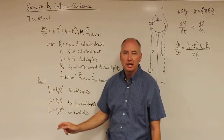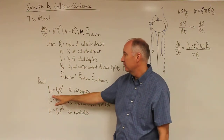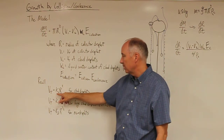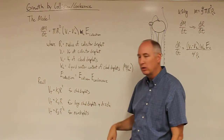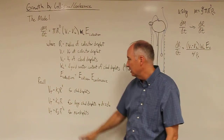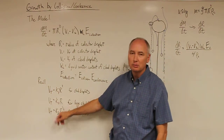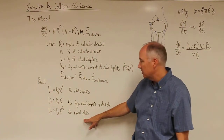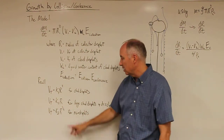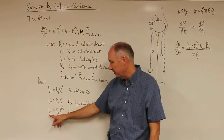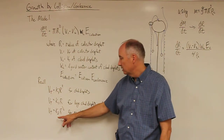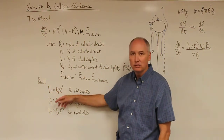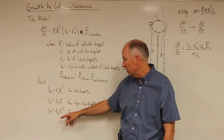From the last lecture, the terminal velocity of cloud droplets is essentially equal to k1 r squared. For large cloud droplets and drizzle droplets, that functional form changes to vt equal to k2 r. And for rain droplets — the large collector droplets — we often use vt equal to k3 times r to the one-half. The values of the constants k1, k2, and k3 were given in the last lecture.